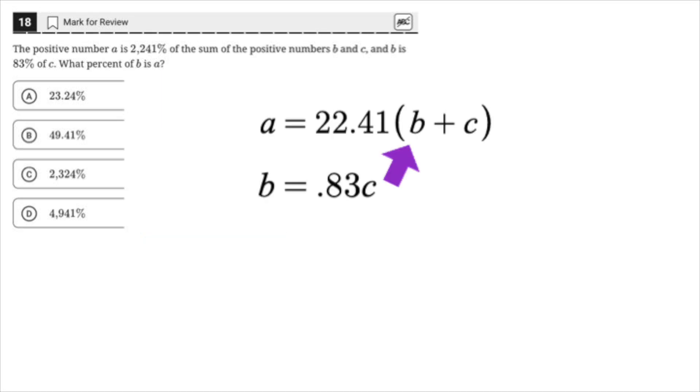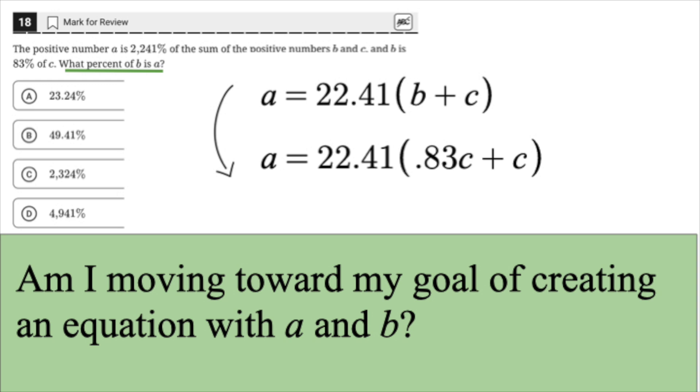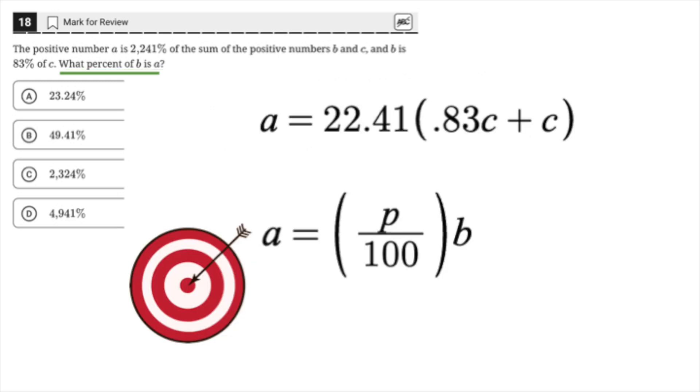If you're on autopilot, you might then want to substitute 0.83C in for B. Don't do that. Ask yourself, am I moving toward my goal of creating an equation with A and B? Remember the question is what percent of B is A? A equals P divided by 100 times B.